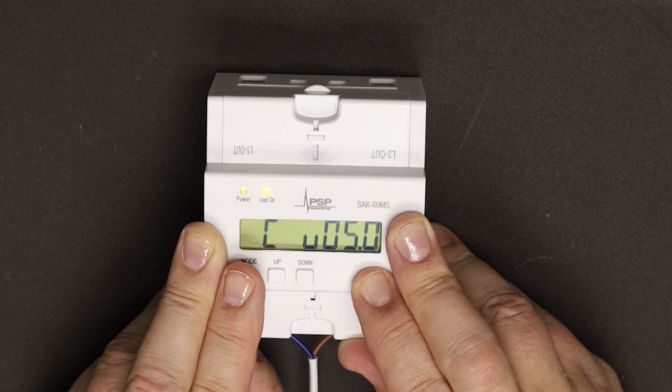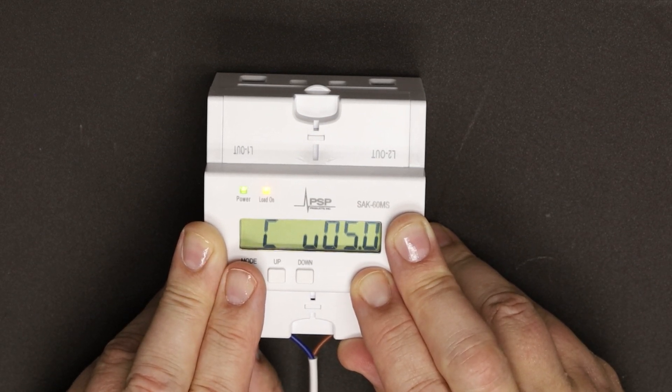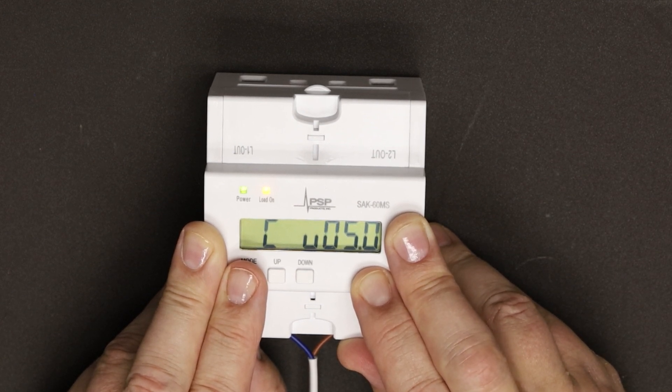CU is the DC operating voltage of the CTs. We ship these with 5-volt CTs, so 5.0 is the default setting, and you can leave it there.